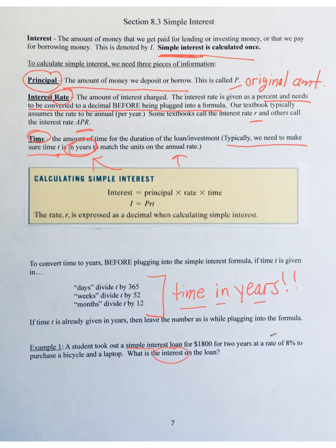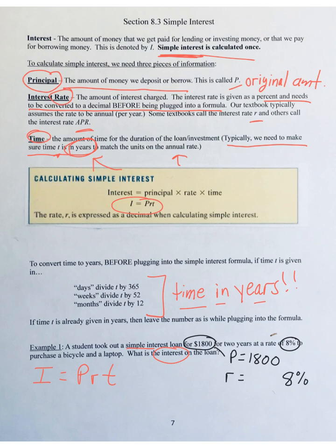Since they want the interest, I'm going to use the formula I equals PRT — principal times rate times time. The principal P, the original amount borrowed, was $1,800. The interest rate is 8%, but before it goes into the formula we convert it to a decimal: move the decimal point two hops to the left, so 8% becomes 0.08. Drop the percent symbol — 0.08 goes into R.